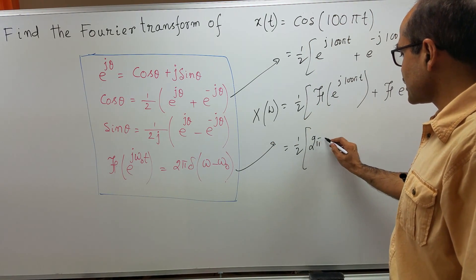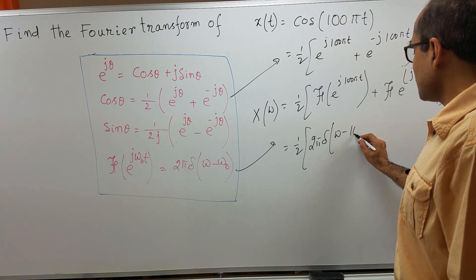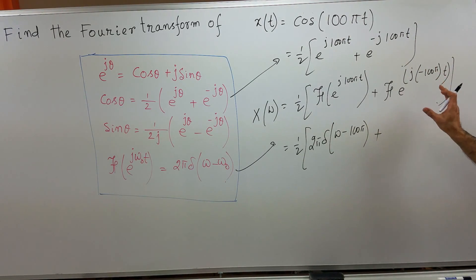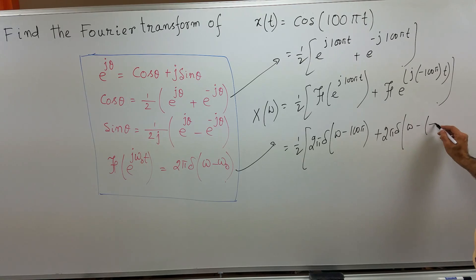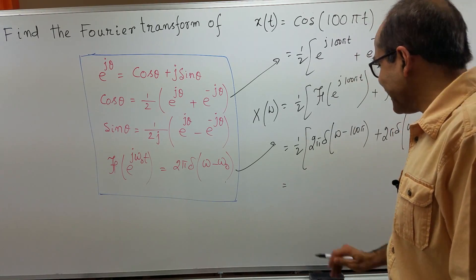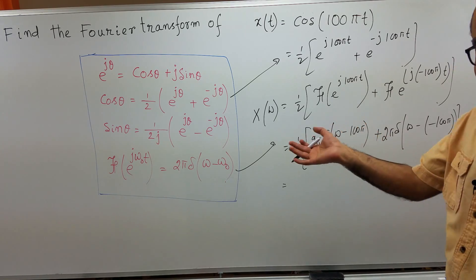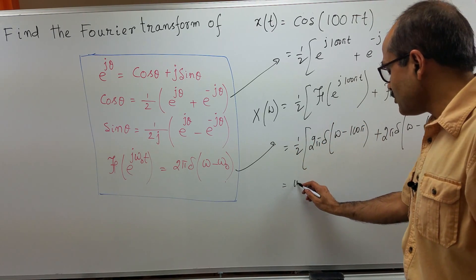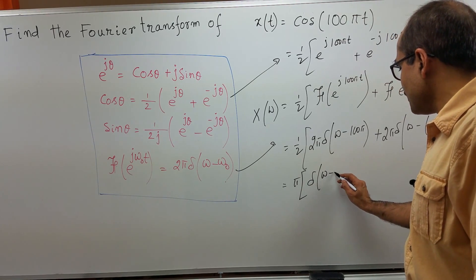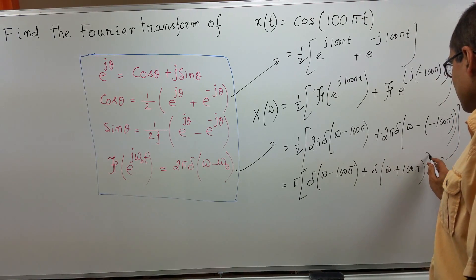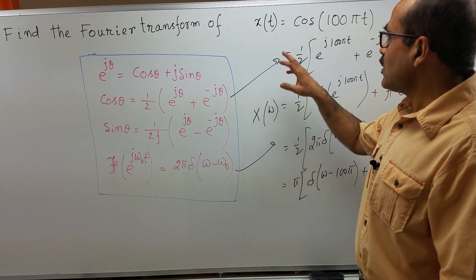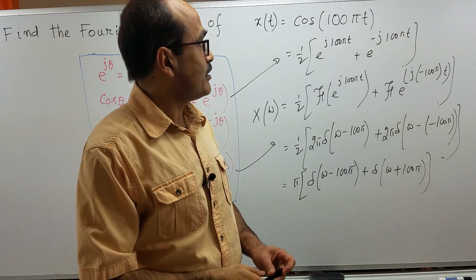This is 2 pi delta(ω minus 100 pi). Now, for the second term, omega 0 is minus 100 pi, so the Fourier transform is 2 pi delta(ω minus (minus 100 pi)). We ultimately get 2 pi common in both of them, so we can take it out. 2 pi over 2 is pi, giving us pi times [delta(ω minus 100 pi) plus delta(ω plus 100 pi)] as the Fourier transform of x(t) equal to cosine 100 pi t.